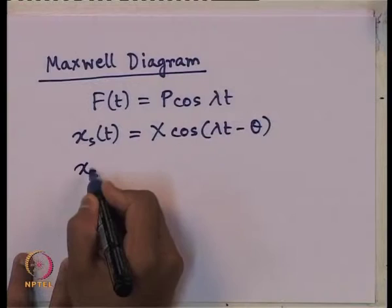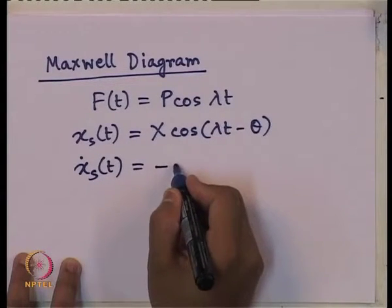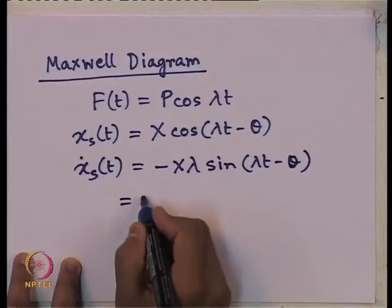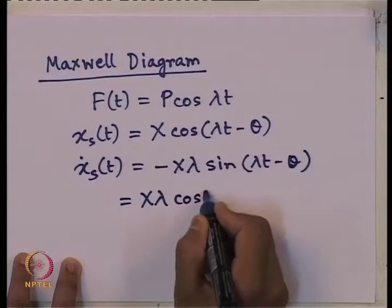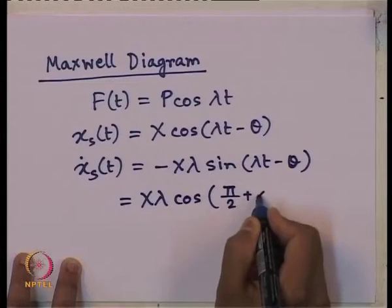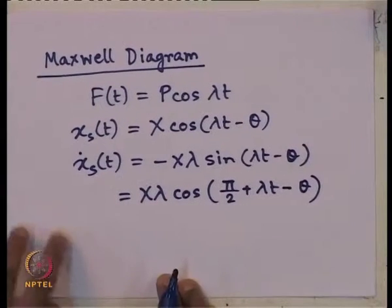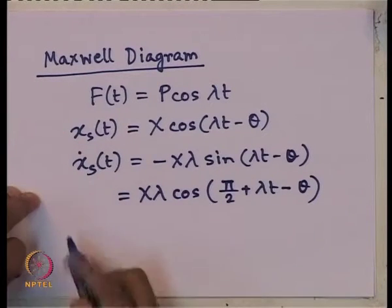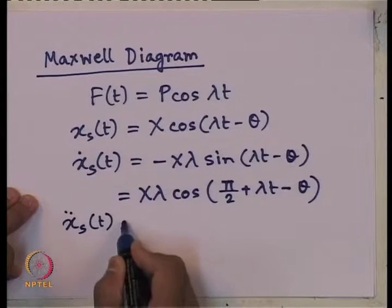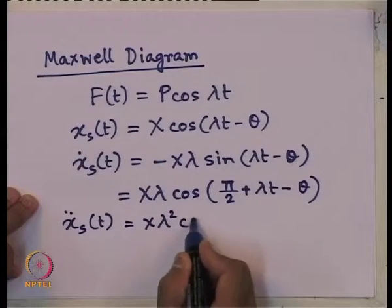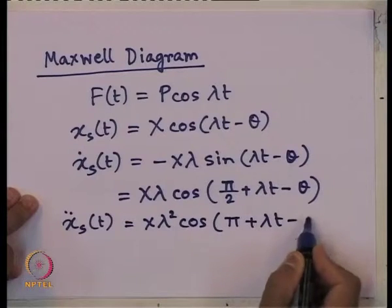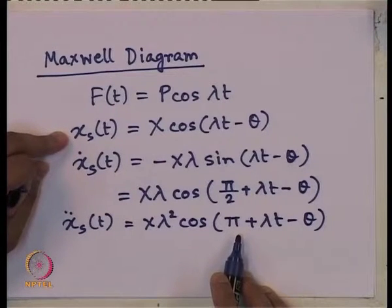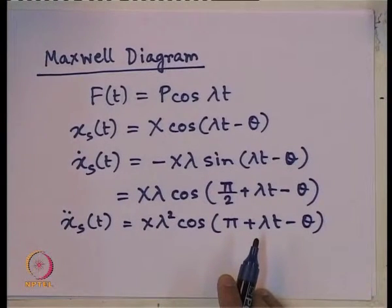The velocity is nothing but minus x lambda sin of (lambda t minus theta), which we can write as x lambda cosine of (pi/2 plus lambda t minus theta). So the velocity is in phase with the displacement with 90 degrees, which is known to us.